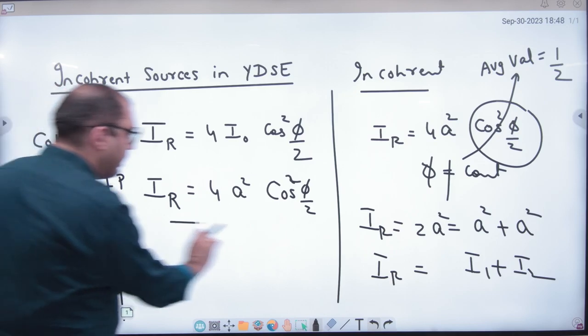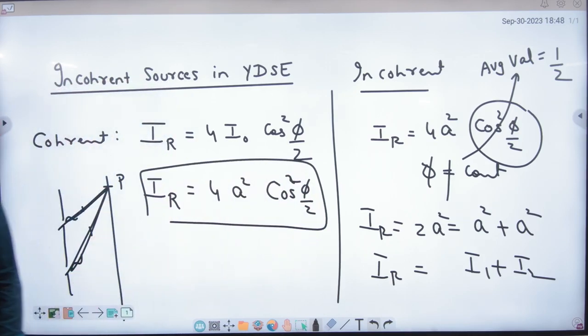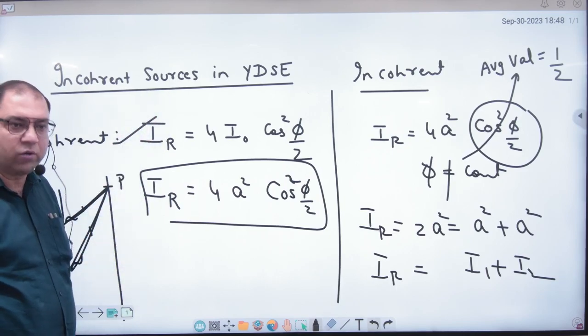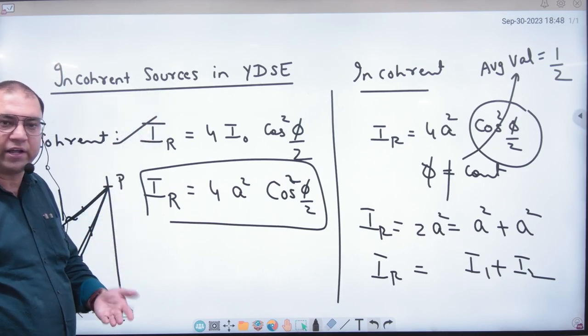When it does not interfere constructively or destructively, it just adds. Or maximum it just adds. So if there are two sources in incoherent, then the answer is I₁ plus I₂.